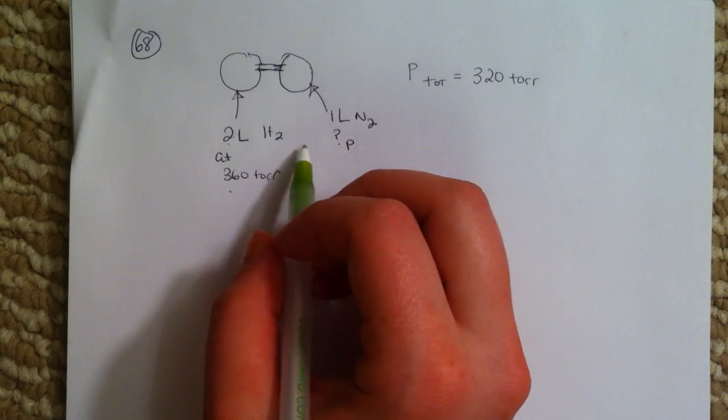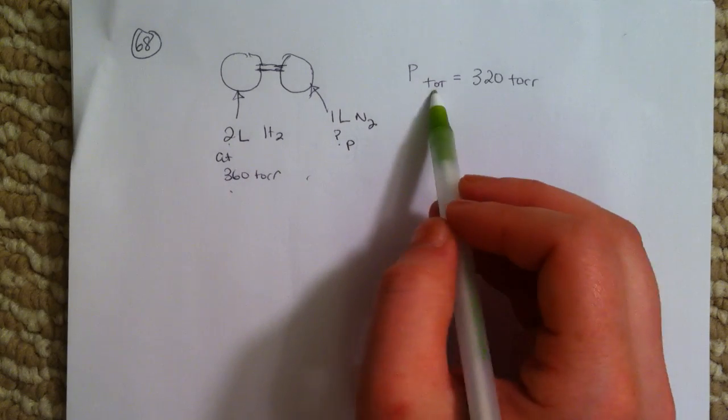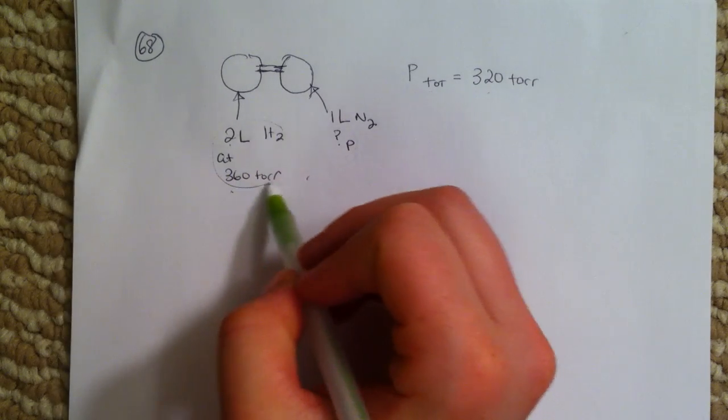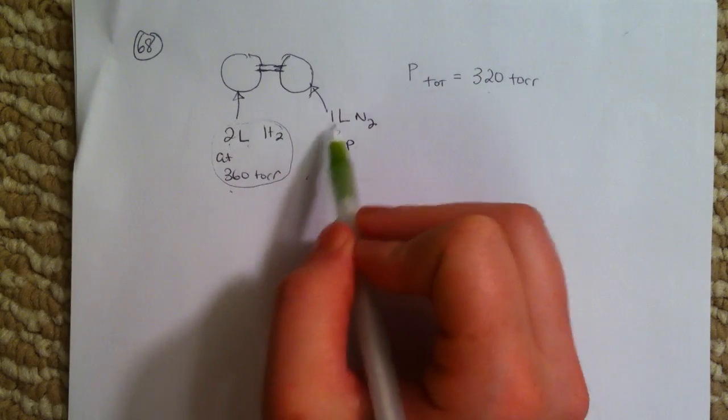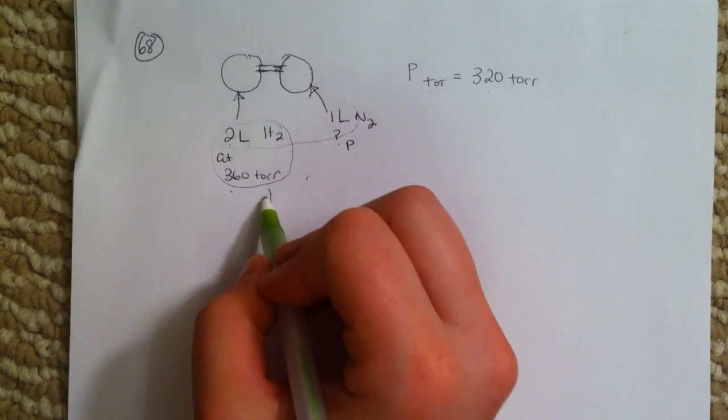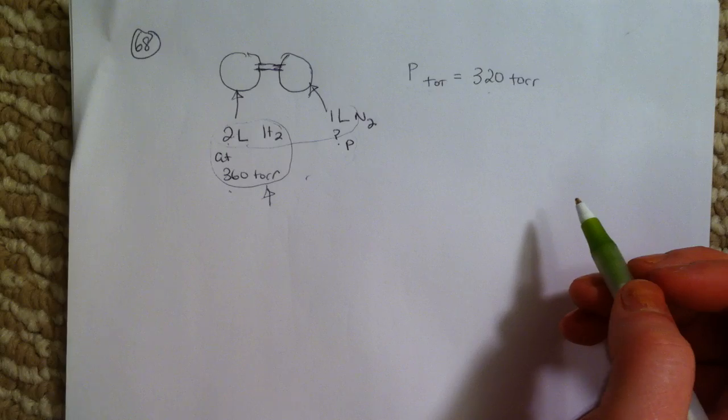So we know that when it's open, the total pressure is going to be 320 torr. And we also know that when it's open, this gas that was in 2 liters is now going to be in 3 liters. So we can find the partial pressure from our H2.